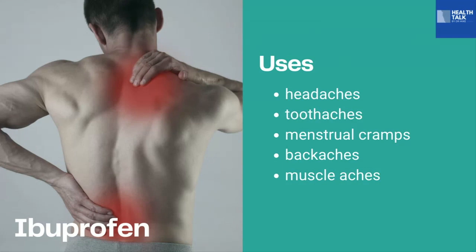In 2006, ibuprofen lysine was approved in the US by the Food and Drug Administration for patients with patent ductus arteriosus in premature infants weighing between 500 to 1,500 grams, who are no more than 32 weeks gestational age, when usual medical management such as fluid restrictions, diuretics, and respiratory support is not effective.